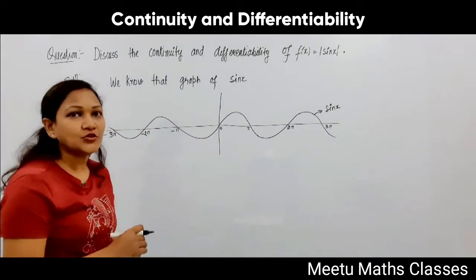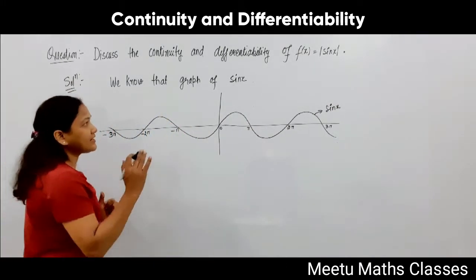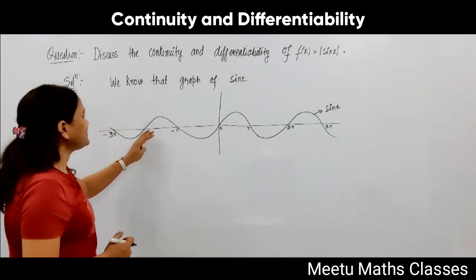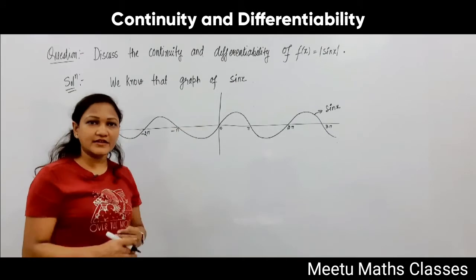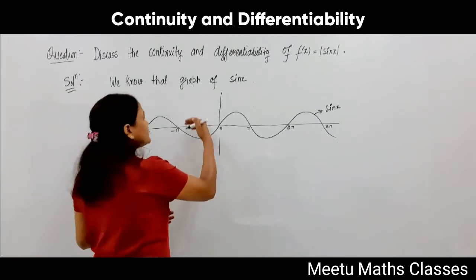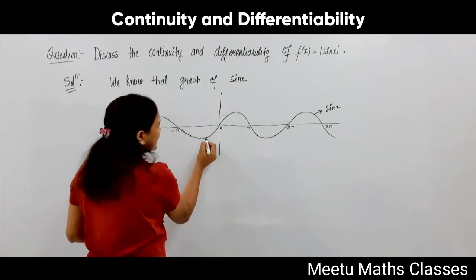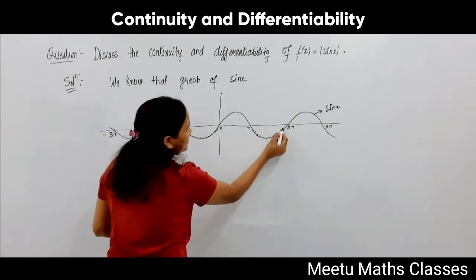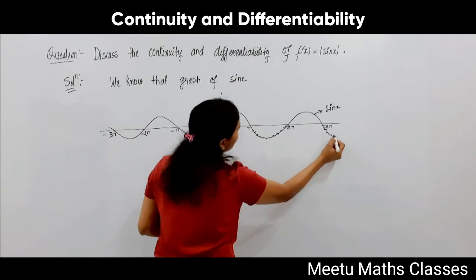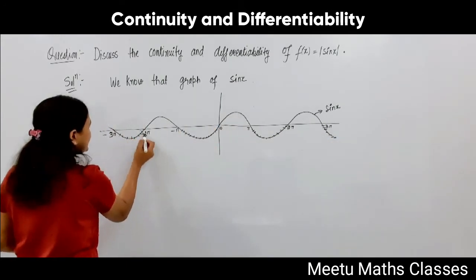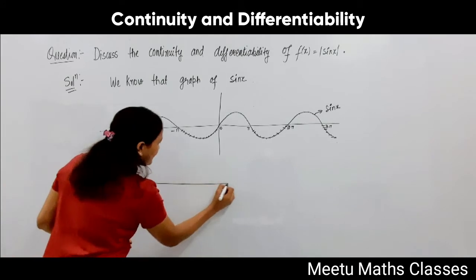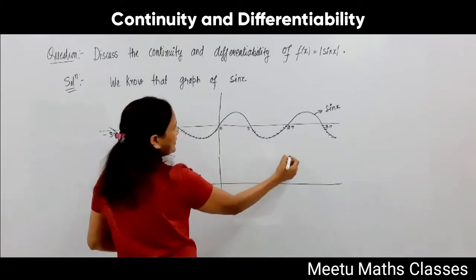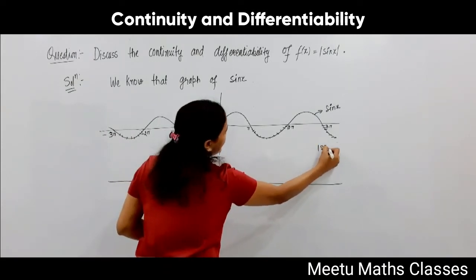What does the modulus function do? Any part of your function that is negative, it makes positive. So whatever part of sine x is negative, modulus of sine x will convert that part to positive.